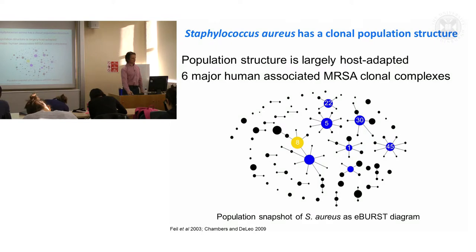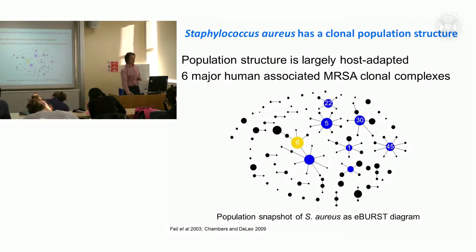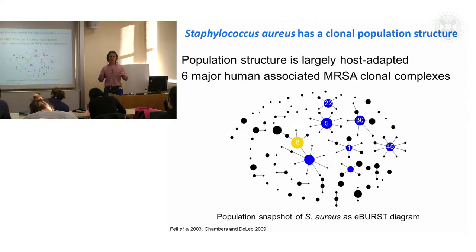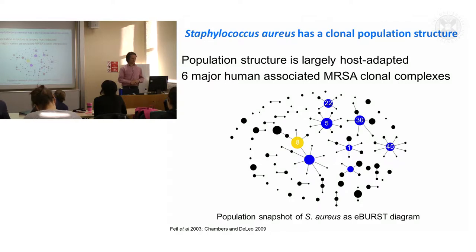This is an E-burst diagram, which shows the clonal structure within the species. Each of these circles represents a different clonal complex of closely related Staph aureus sequence types, and some of the most abundant ones are indicated by the large circles.